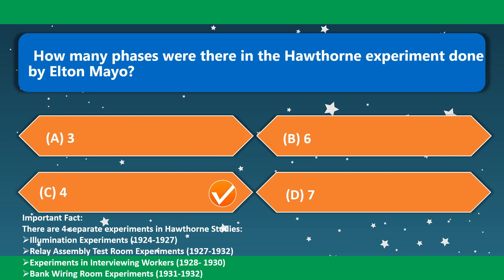How many phases were there in the Hawthorne experiments done by Elton Mayo? 4 — option C is the correct option. There are four separate experiments in the Hawthorne studies: Illumination experiments (1924–1927); Relay Assembly Test Room experiments (1927–1932); Experiments in interviewing workers (1928–1930); and Bank Wiring Room experiments (1931–1932).